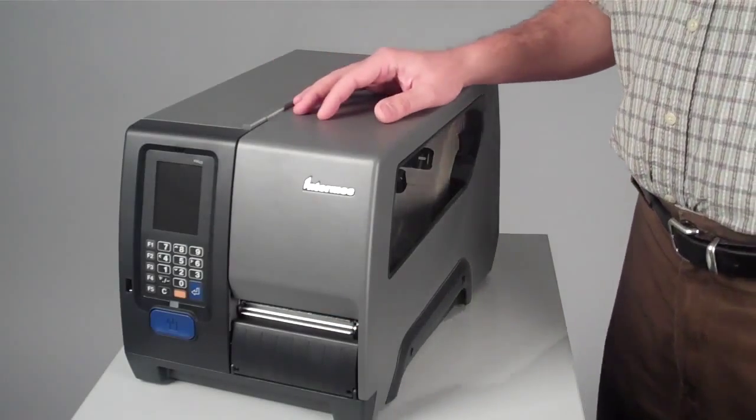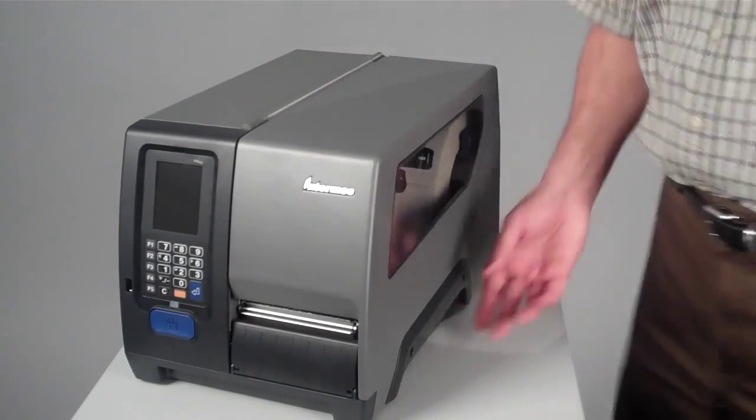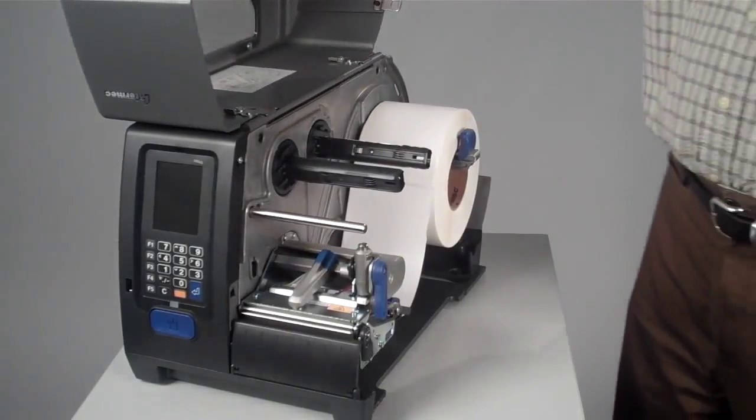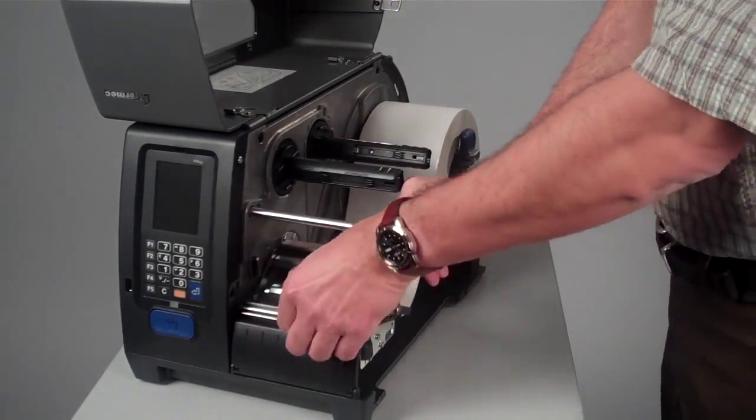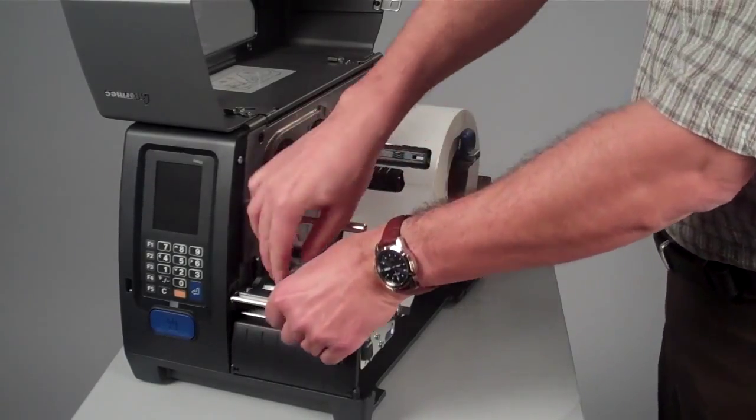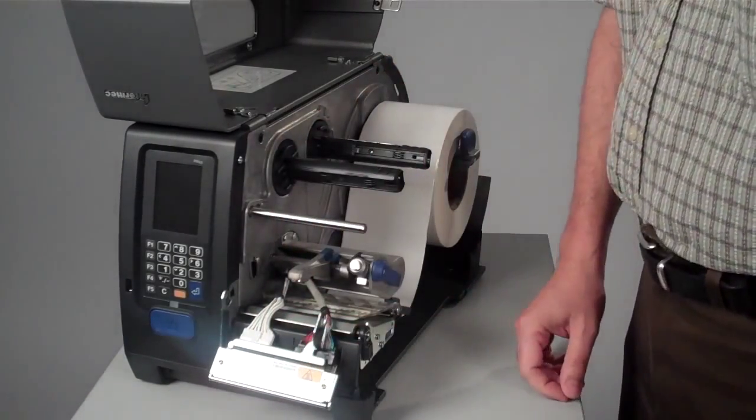Let us review now how to replace the print head on an Intermec PM43 printer. Intermec PM43 print head is a magnetic print head, easily removable without any tools, jigs, or most importantly loose parts.